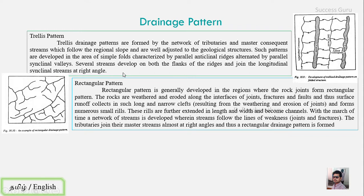The next is the rectangular pattern. This is a structural control based on rocks and joints — specifically conjugate joints. Where there are joints in the rock, erosion is easier because the rock breaks along joint planes, making it easy to disintegrate. The main stream and tributaries meet at 90-degree angles, similar to the trellis pattern, but controlled by joints rather than folded strata.